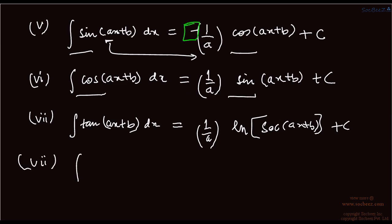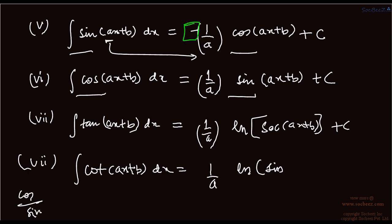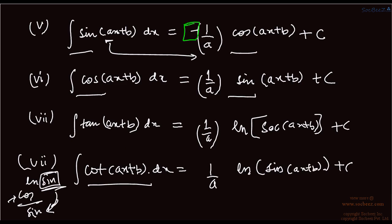The eighth formula: the integral of cot(ax + b) dx. That will be 1/a times ln|sin(ax + b)| plus c. The reason: cot is cos upon sin, so if we take ln of sin, then differentiating it brings sin x down and the differentiation gives cos x — that's why we have cot(ax + b) integrating to this.